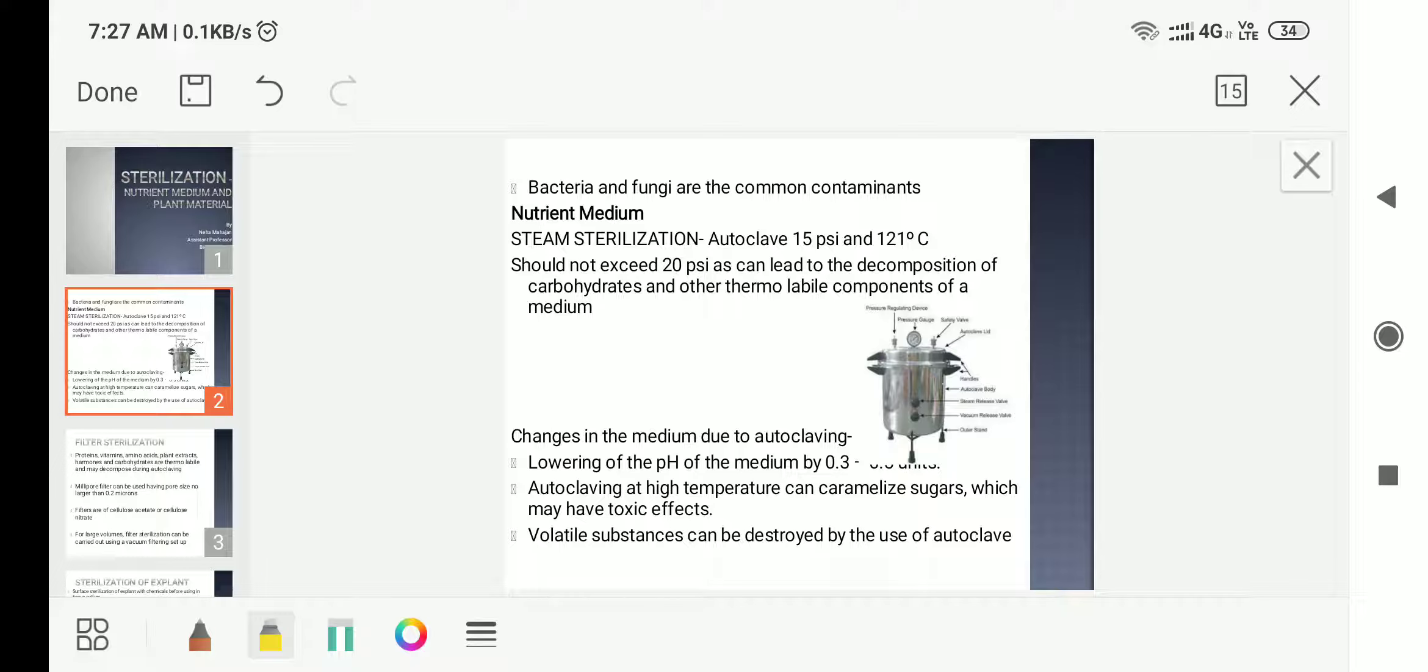Now there are two methods for sterilization of culture medium. One is steam sterilization and another one is filter sterilization. Steam sterilization is done with the help of an autoclave.